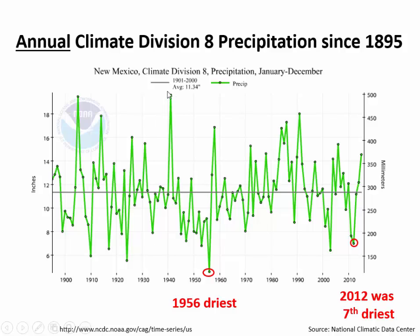Our wettest year was 1941 and our driest was 1956 during the drought. That whole period was the 1950s drought. Then the 1970s, 80s, and 90s were periods of more or less wetter conditions. Then it went through a drier period in more recent history, with 2012 being the seventh driest.